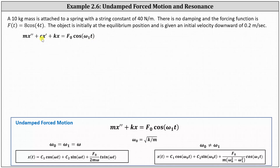Since c is equal to zero, we can simplify the differential equation to mx'' + kx = F₀·cos(ω₁t), where ω₀ = √(k/m). This is important because if ω₀ equals ω₁, the general solution will have the form shown on the left. If ω₀ does not equal ω₁, the general solution will have the form shown on the right.